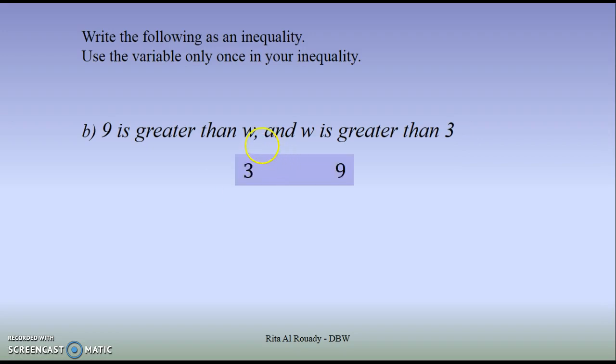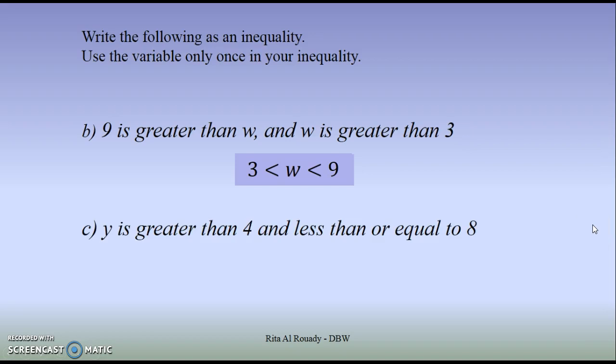So three and nine. Well, W is greater than 3 and less than 9. One final example, this time four is the smaller value.